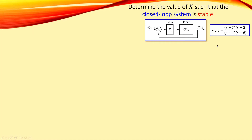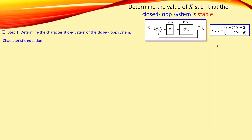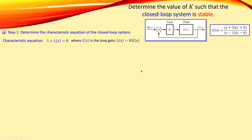So how do we start? Step-by-step, we follow the procedure as in the previous videos. The first step is to determine the characteristic equation of the closed-loop system. That is done using the formula: one plus the loop gain equal to zero. The loop gain is determined by starting at one point in the configuration, making a full circle, and multiplying the transfer functions — so K times G(s), the open-loop transfer function.